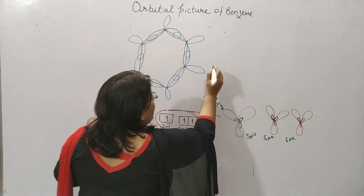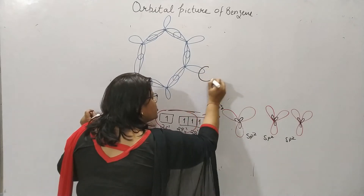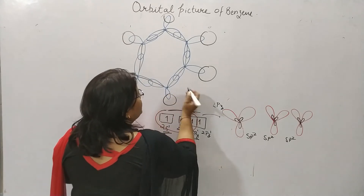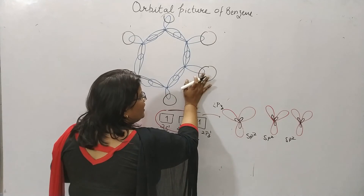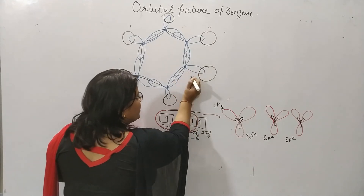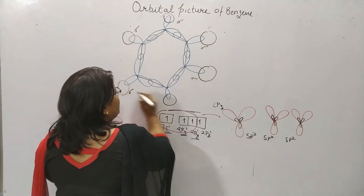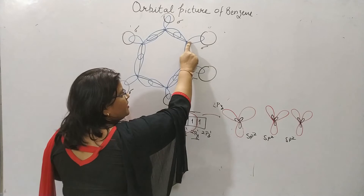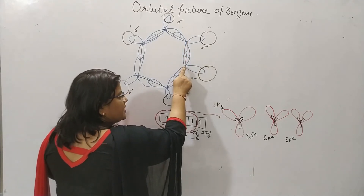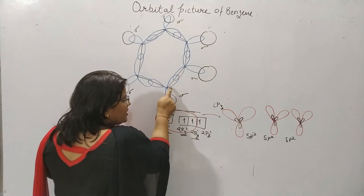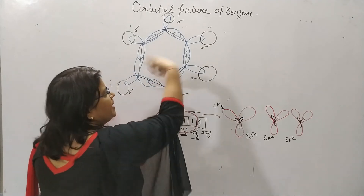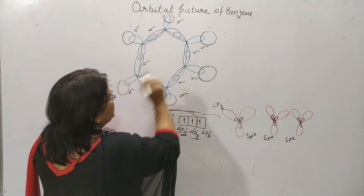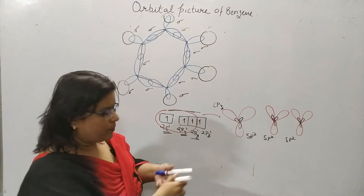The hydrogen has only a single electron, so the single 1s orbital of hydrogen co-axially overlaps with the sp2 hybridized orbital of carbon, forming a sigma bond. The 2nd sp2 hybridized orbital makes a sigma bond with the neighboring carbon on one side, and the 3rd sp2 hybridized orbital makes a sigma bond with the neighboring carbon on the other side. So 6 sigma bonds are formed between carbons.